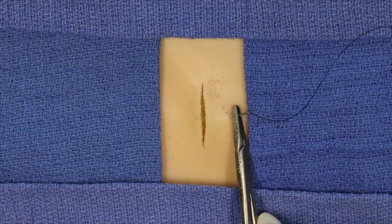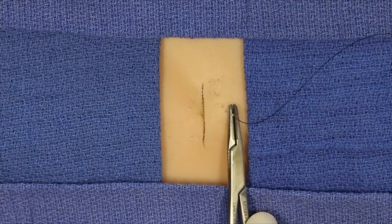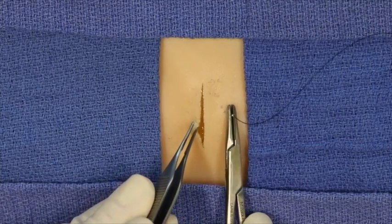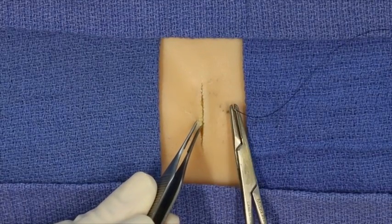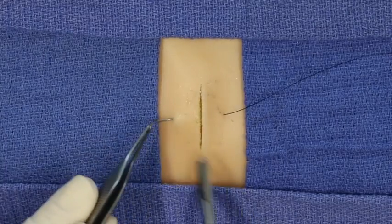At this point, the needle can either exit in the center of the wound and be reloaded, or if it is a smaller wound, the needle can traverse all the way to the contralateral side far from the wound edge, like so.